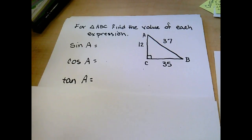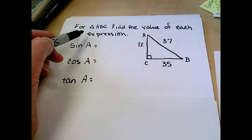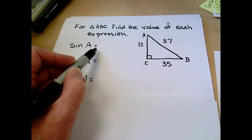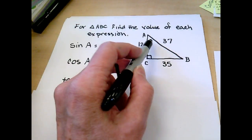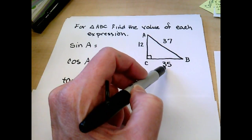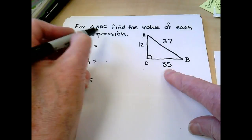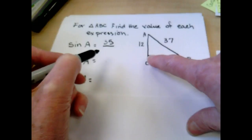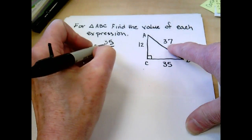So how we're going to use this: right now for triangle ABC, find the value of each expression. If they're saying the sine of A is equal to, we go to A. The sine was our opposite over the hypotenuse. So my opposite side is 35. My hypotenuse is always opposite that right angle. It's 37.